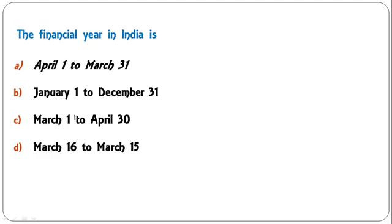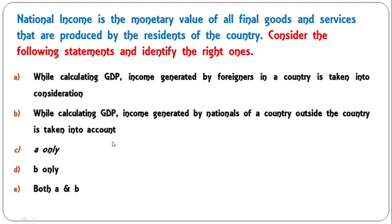The financial year in India is from April 1st to March 31st — this is a very obvious question. National income is the monetary value of all final goods and services that are produced by the residents of the country.